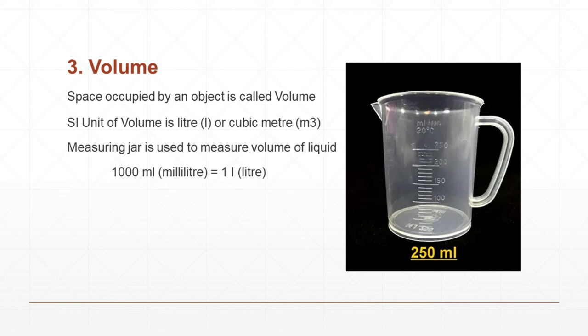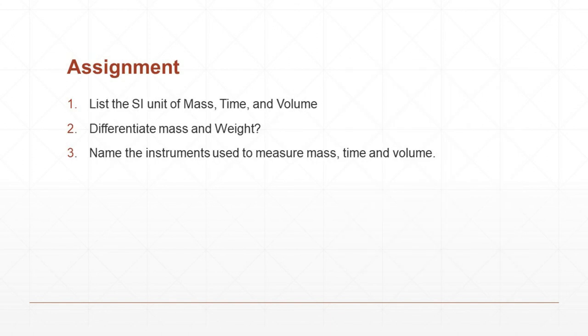Now, the assignment is list the SI unit of mass, time and volume. Then, write the difference between mass and weight. Then, the third question is name the following: Instrument used to measure mass, instrument used to measure time, instrument used to measure volume. These are the answers also you have to write.